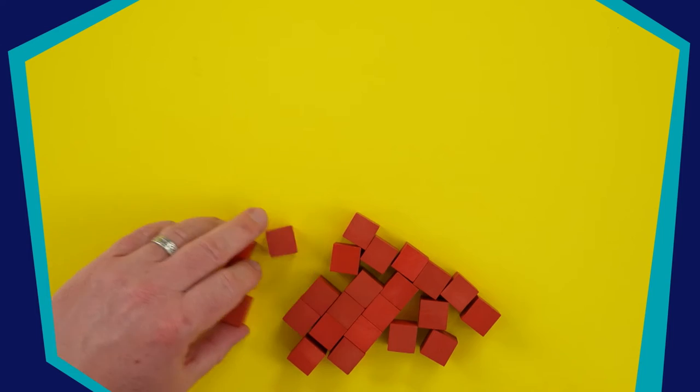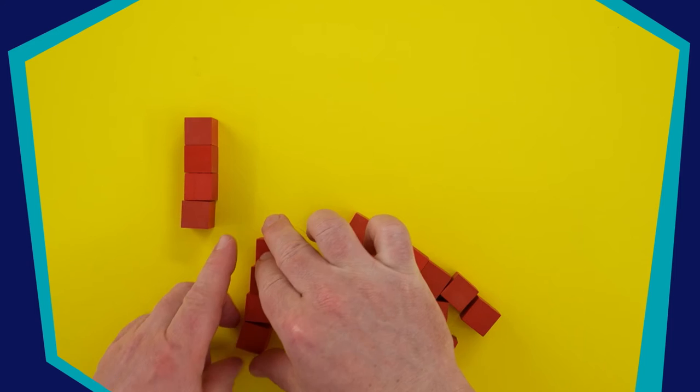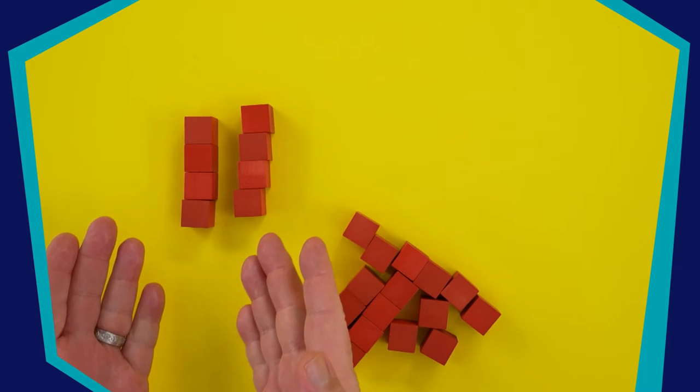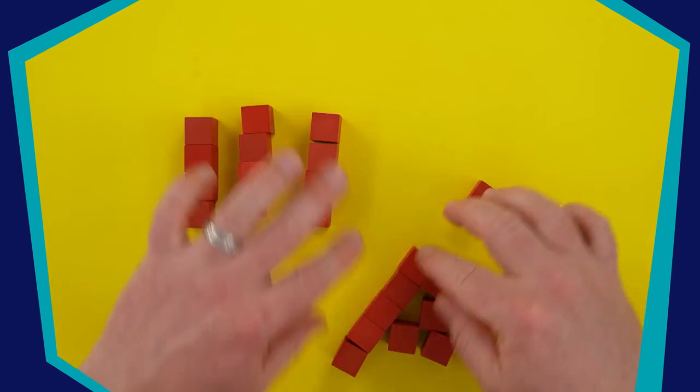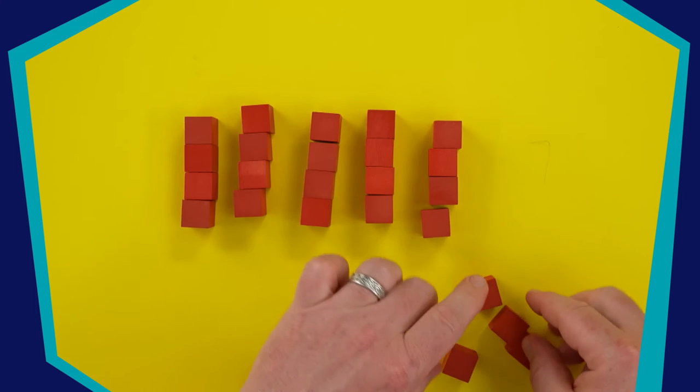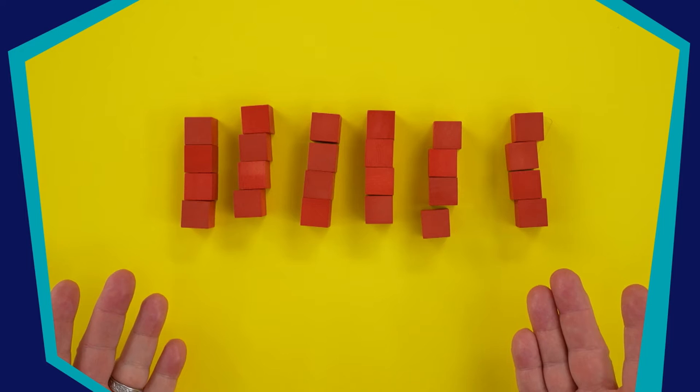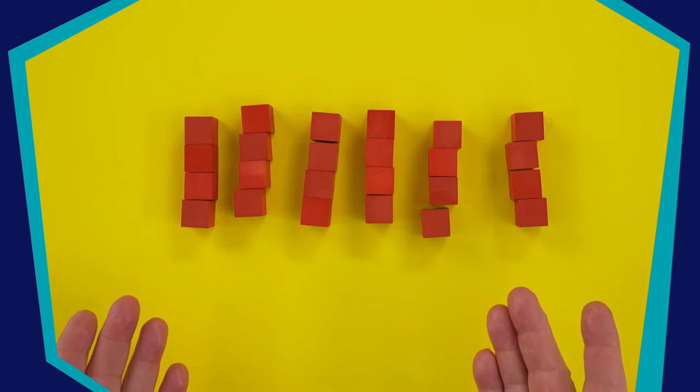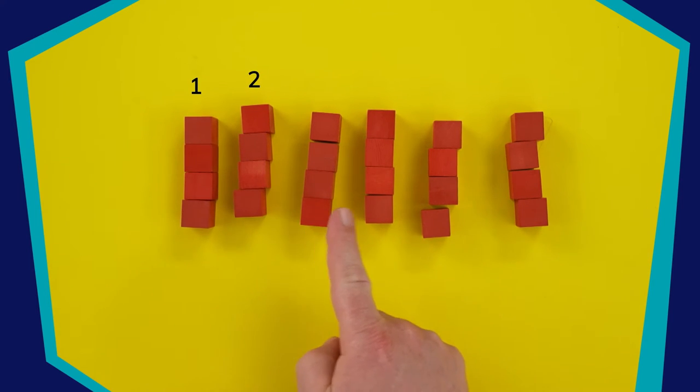So let's model that visually with some base ten blocks. Here's one group of four. Here's a second group of four. Now I have a total of eight blocks. I'll keep adding groups of four until I have twenty-four blocks. If I divide twenty-four into groups of four, how many groups do I have? One, two, three, four, five, six. Six.